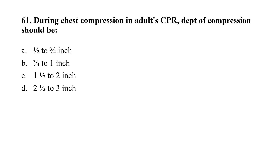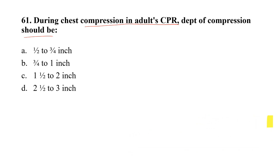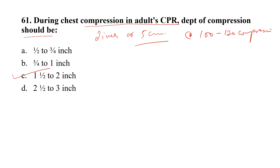Question number 61. During chest compression in adult CPR, the depth of compression should be: Option A, 1.5 to 3.4 inch; Option B, 3.4 inch to 1 inch; Option C, 1.5 inch to 2 inch; Option D, 2.5 inch to 3 inch. The correct option is C, that is 1.5 inch to 2 inch. During adult CPR, the depth of compression should be at least 2 inch or 5 cm, and the rate of compression should be 100 to 120 compressions per minute.